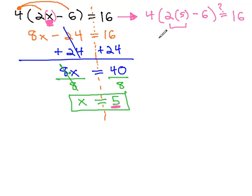We will follow the order of operations on the left side to see what we get. First, inside the parentheses, doing 2 times 5, which is 10, minus 6, and we hope this will equal 16.